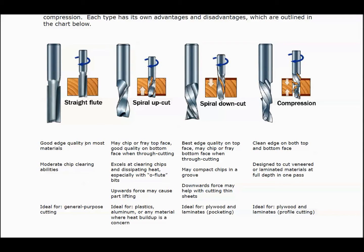As technology keeps increasing with CNC, they've created bits with an up spiral, a down spiral, and a compression. The geometry designed into the flute spirals in a way that brings the chip up out of the cut — that's an up spiral. With a down spiral, the chip is actually pushed down. The chip I'm talking about is the sawdust or scrap material being removed depending on the material you're using. The up spiral is a great bit.